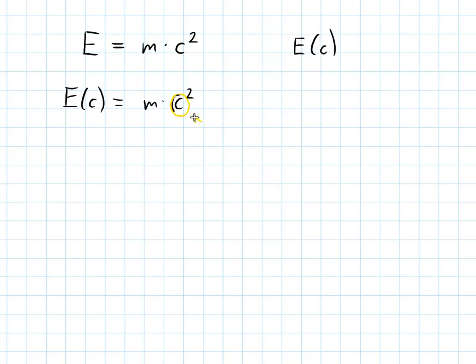And now you have to think that the c is the variable. This is the variable. And everything else will be parameters. And if you compare it to function types that you know, then you could find out that e of c is a quadratic function. Because the variable is squared.